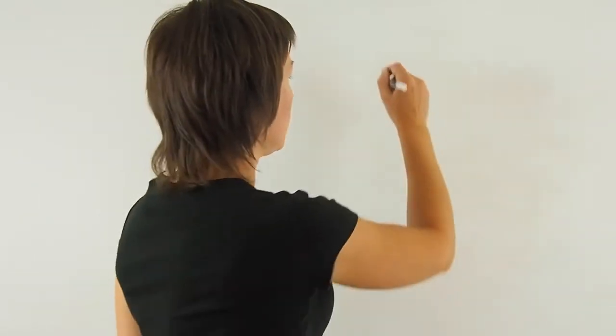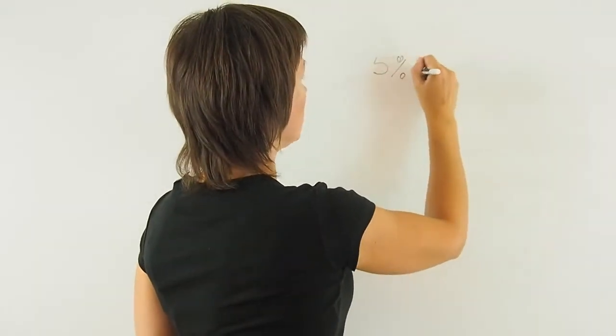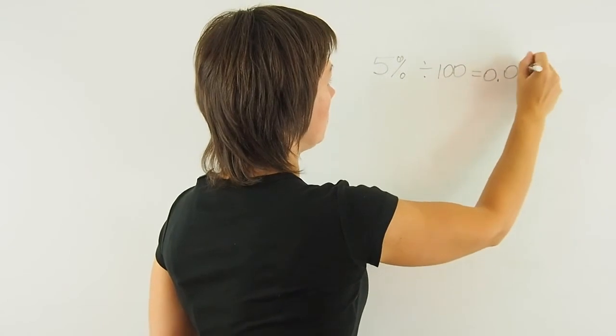And I want to turn percent into decimals. I need to divide them by 100. So 5% divided by 100 is 0.05.